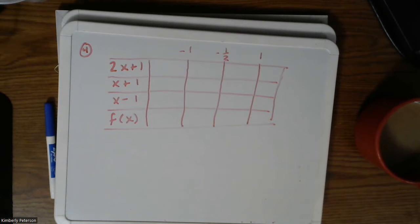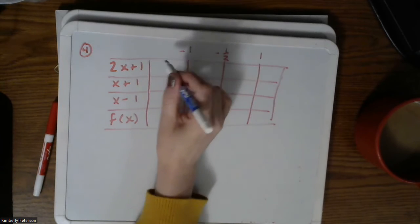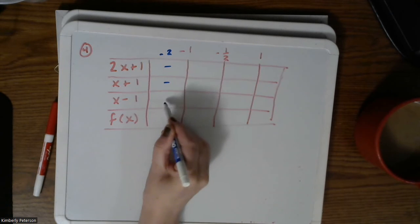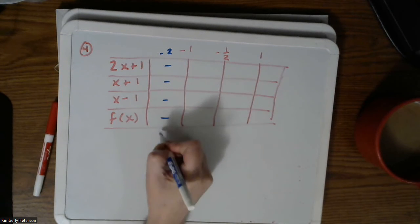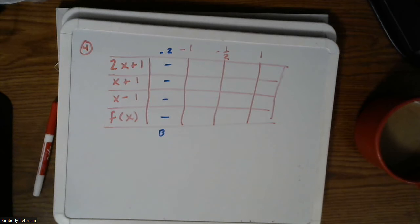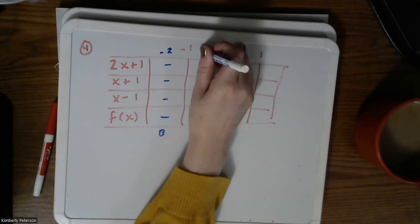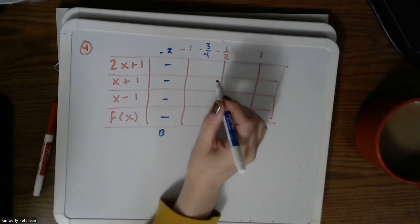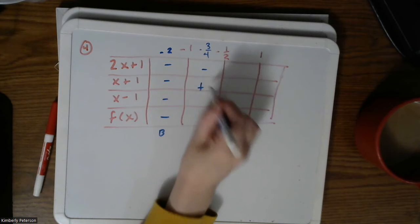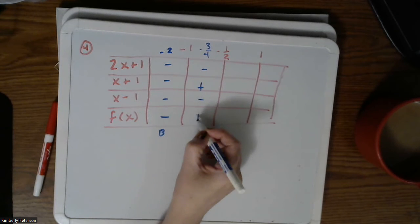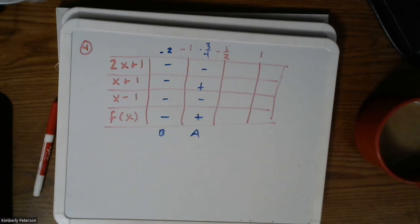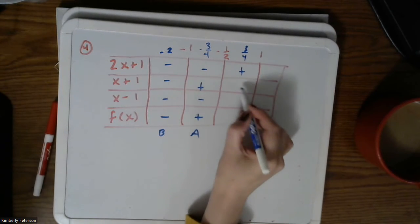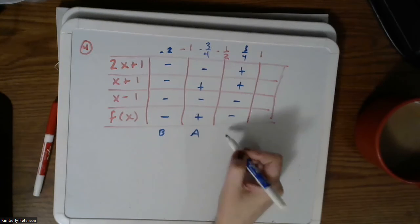We pick values in each interval. For negative 2: negative, negative, negative — product is negative, so below the x-axis. For negative three fourths: negative, positive, negative — product is positive, so above. For positive three fourths: positive, positive, negative — product is negative, so below. For anything greater than 1: all positive, so above.